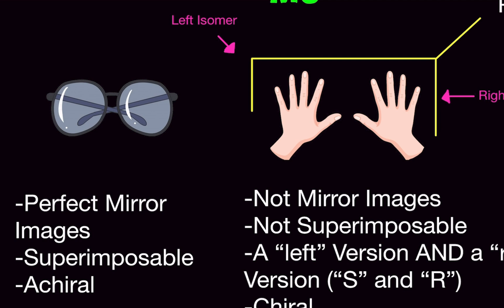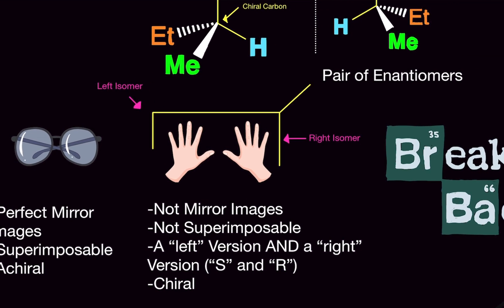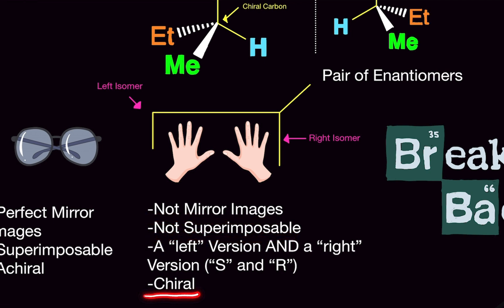Now consider two hands — a left hand and a right hand. They look similar but are not identical because you have a left-hand version and a right-hand version. If you place one directly over the other, they don't match — we call this not superimposable. In organic chemistry we call these the S version (sinister, or left) and the R version (rectus, or right). Anything that's not superimposable is chiral.